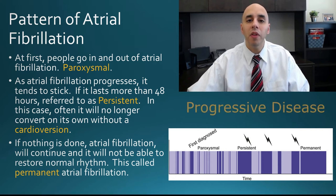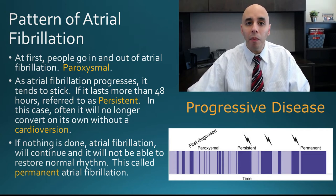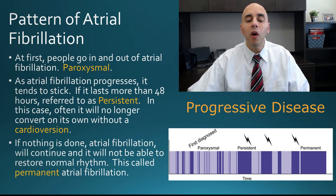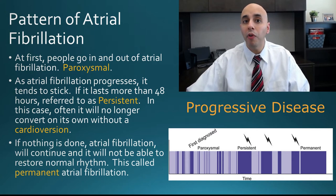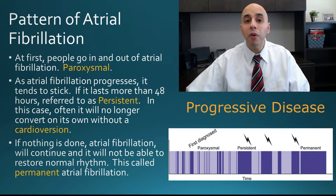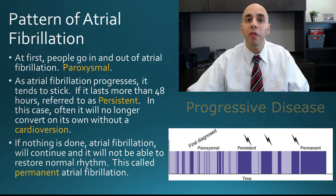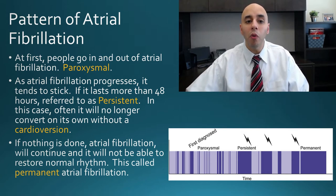Unfortunately, the pattern of atrial fibrillation is that it is progressive. Initially, people have episodes of atrial fibrillation and go in and out of them — this is referred to as paroxysmal atrial fibrillation, meaning occasional. As time goes on, episodes increase in duration: they might last 20 minutes, then 40 minutes, then hours, then days. Episodes also become more frequent — from once a year to once a month, then once a week, becoming more and more progressive.